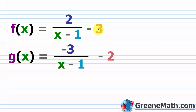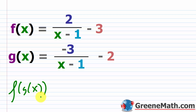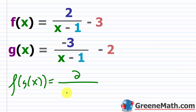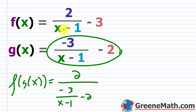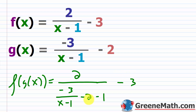Let's take a look at another one. We have f of x equals 2 over x minus 1, and then minus 3. And g of x equals negative 3 over x minus 1, and then minus 2. So I'm going to start with f of g of x. I'll have 2 over the quantity negative 3 over x minus 1, minus 2, and then minus 1. So this whole thing got plugged in there. Outside of this, I've still got minus 3. This one is really easy to make a mistake on, so be very careful when plugging stuff in.